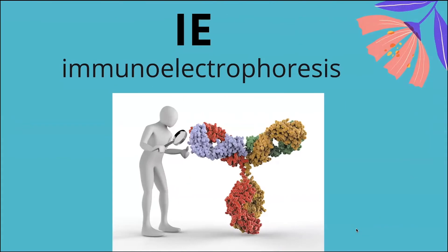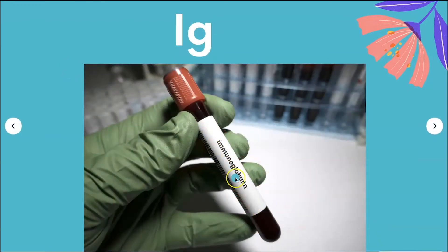IE stands for immunoelectrophoresis. Immunoelectrophoresis is a blood test used to measure the types of immunoglobulins present in your blood. Immunoglobulins are a group of proteins also known as antibodies — they are the first line of defense against invading pathogens and help your body fight infection. IG stands for immunoglobulin, which is also known as antibodies.